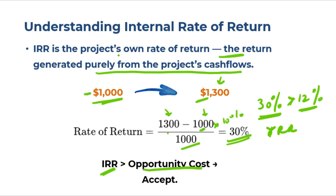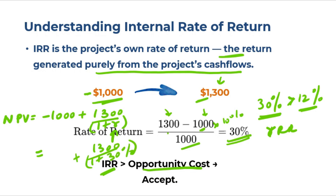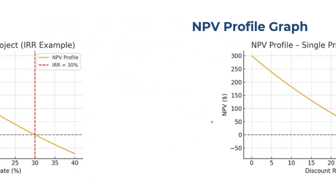Both the NPV rule and the IRR rule set the same cutoff. In the NPV formula — minus $1000 plus $1300/(1+r) — if the opportunity cost were 30% (the IRR), the NPV becomes zero. So when IRR equals the opportunity cost of capital, there's nothing to choose between taking the project or leaving money in the mutual fund. This gives us another definition of IRR: it is the discount rate that makes NPV equal to zero.